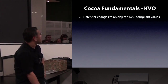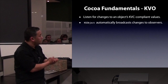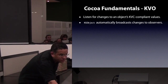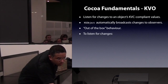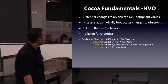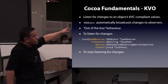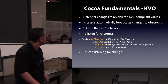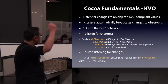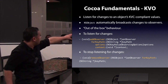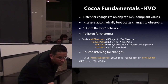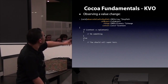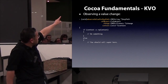Once you understand KVC, the next step is KVO — Key Value Observing. KVO comes out of the box if you inherit from NSObject. It's a way to listen for changes within an object's property. You use addObserver:forKeyPath:options:context:, specifying the observer, the key path you're interested in, what kind of change to listen for, and an optional context object for filtering. To stop listening, call removeObserver: or removeObserver:forKeyPath:. One key point: if you're not handling the change, you must call super, otherwise you get strange bugs.